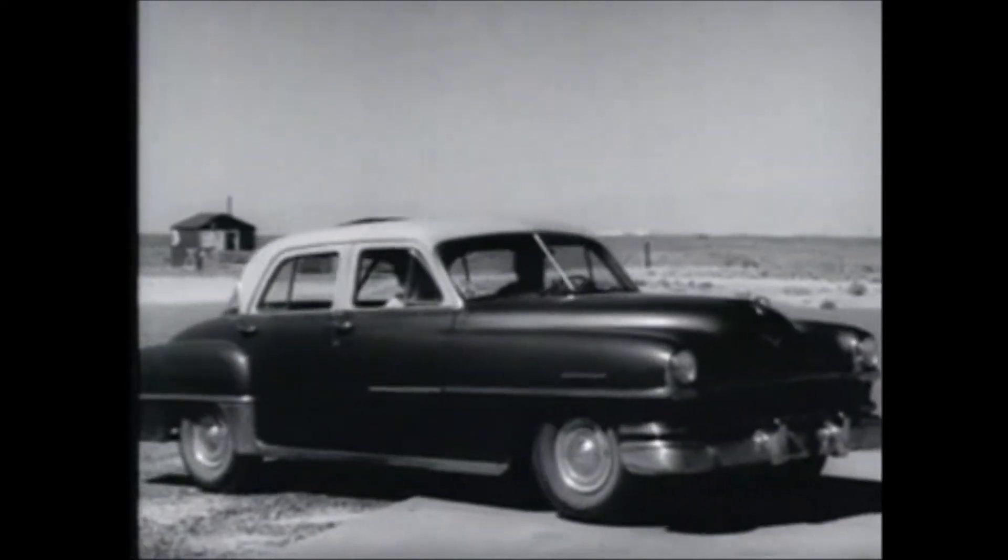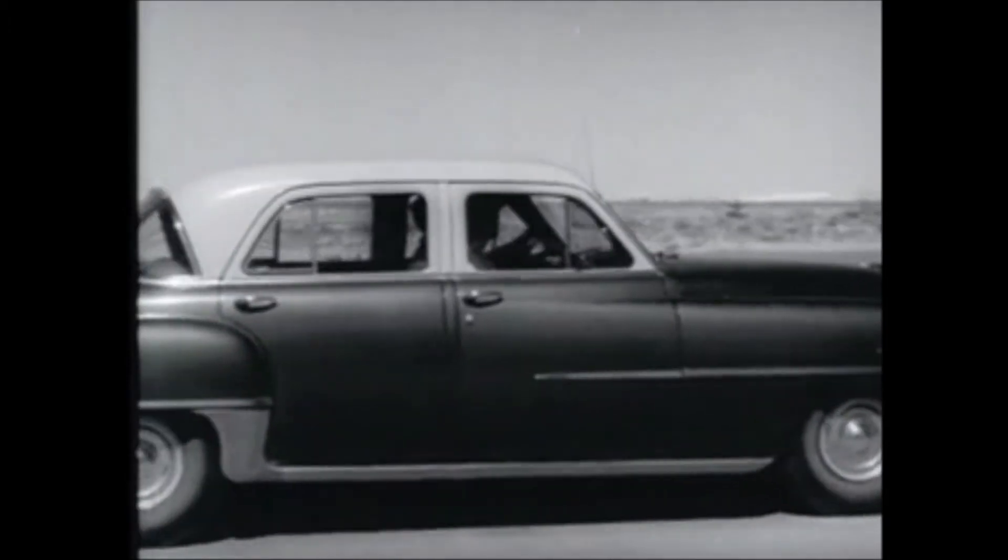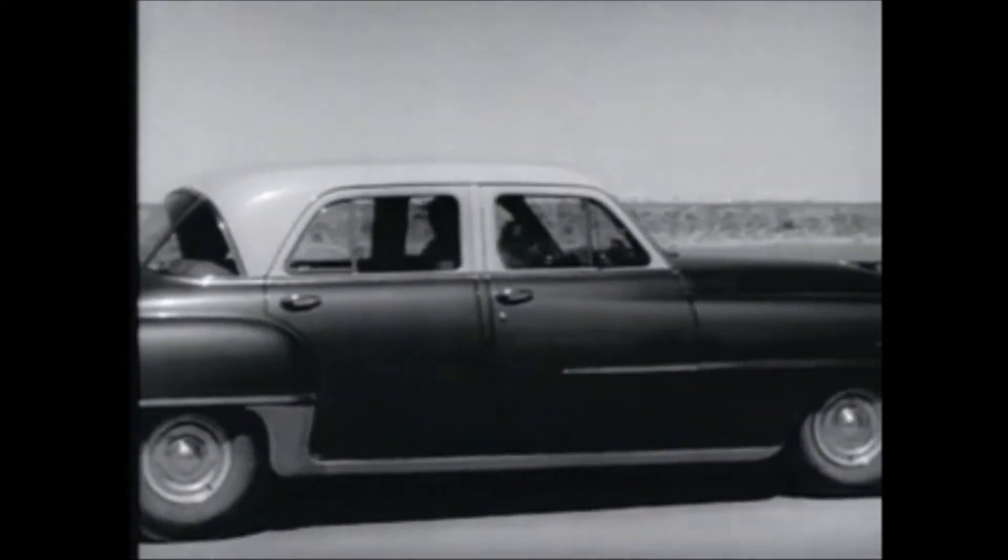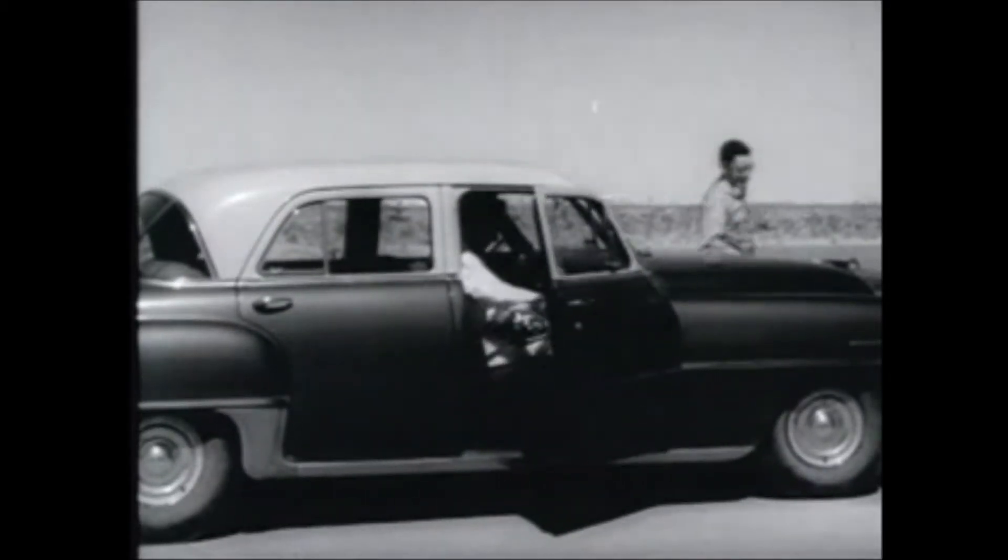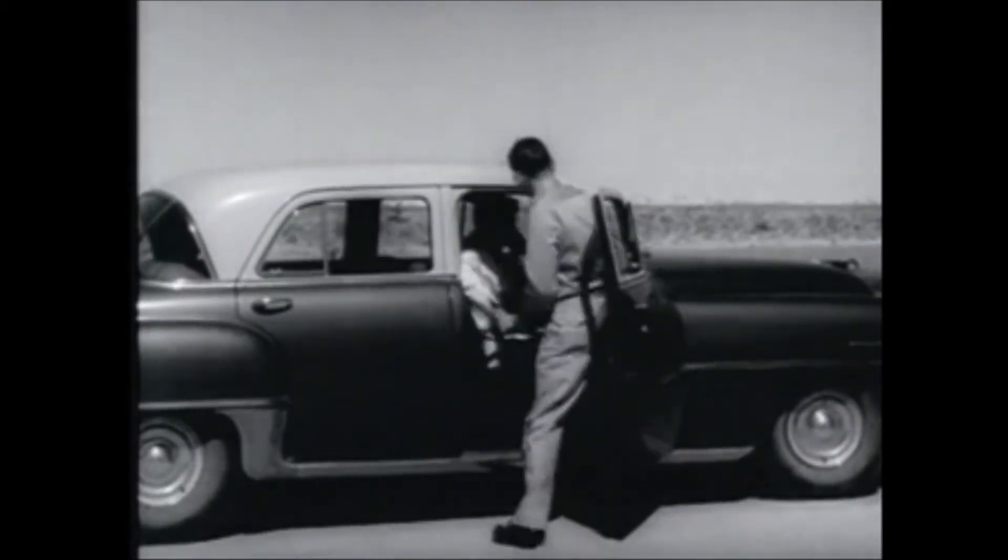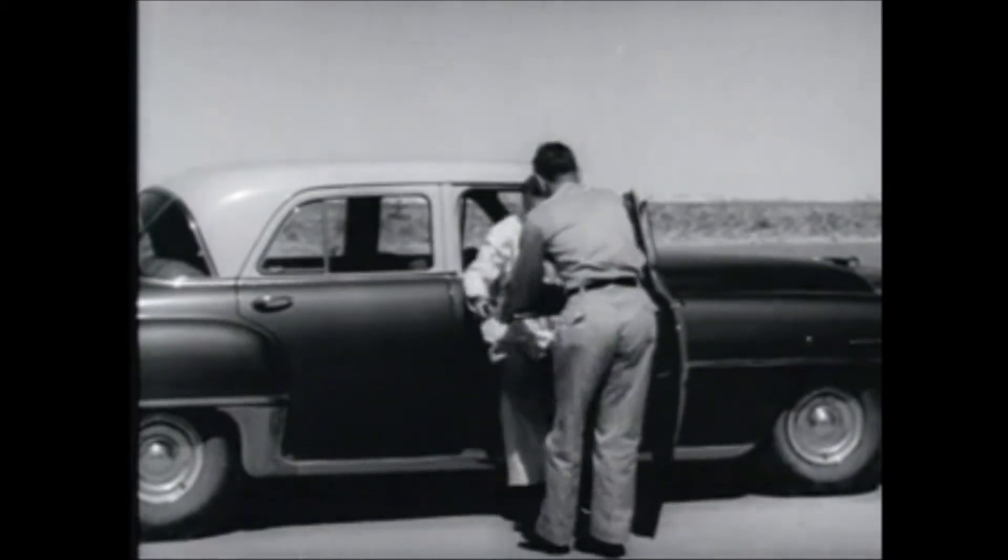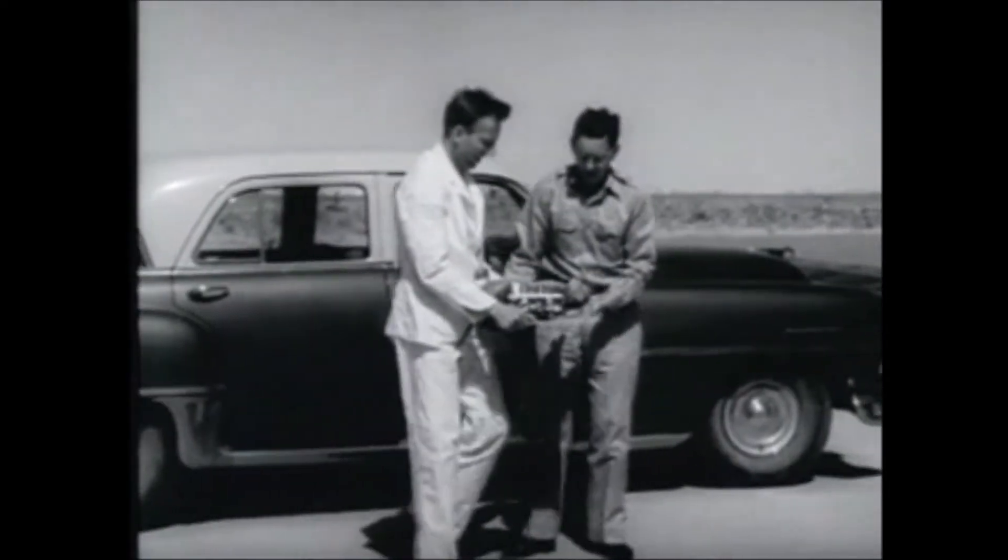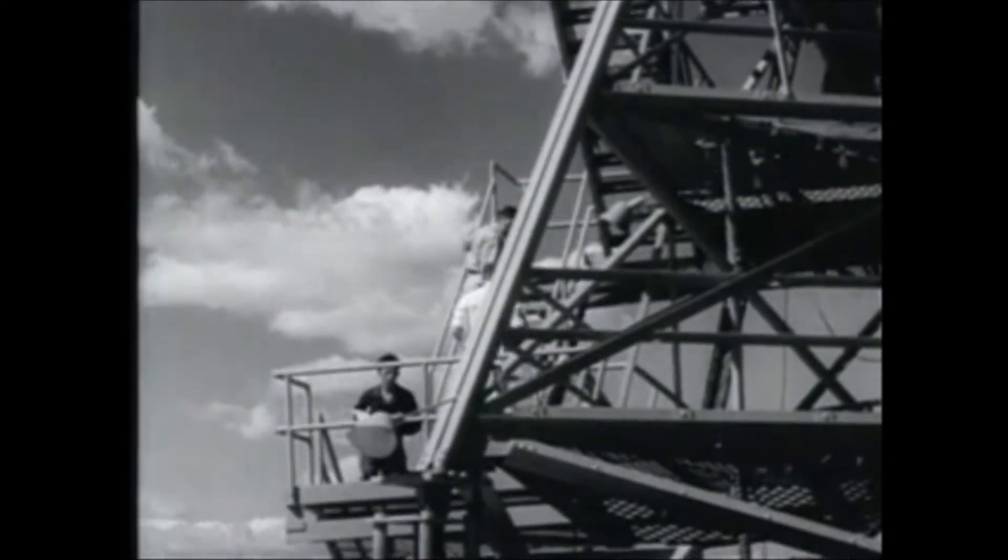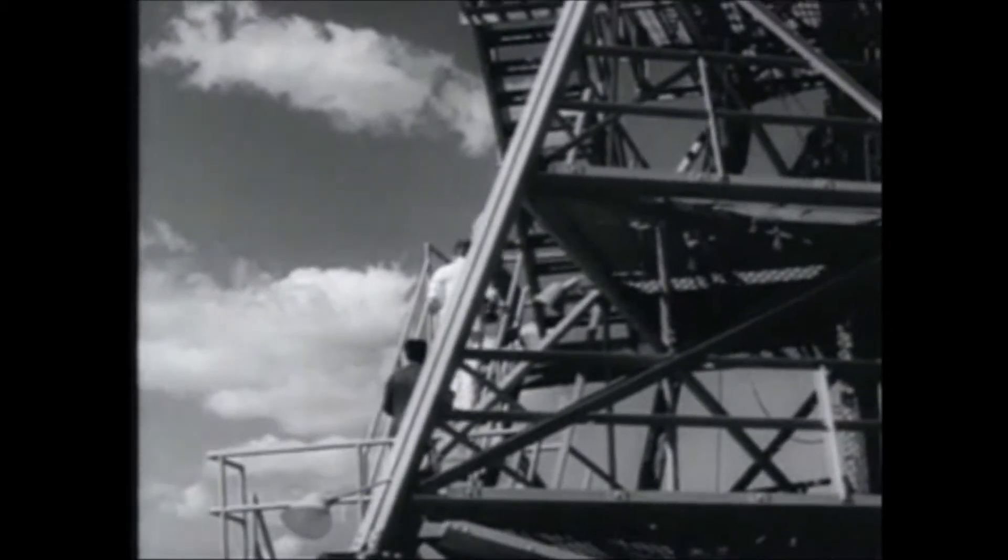Monkeys were chosen for the test because they most nearly approximate the physiological structure of man, and reactions they have to the rocket flight will be indicative of a normal man's reaction. Mice were chosen for the subgravity tests because they were the smallest available animals which could fit into the limited free space inside the rocket. With the animals on scene, hoisting of the nose section can begin.